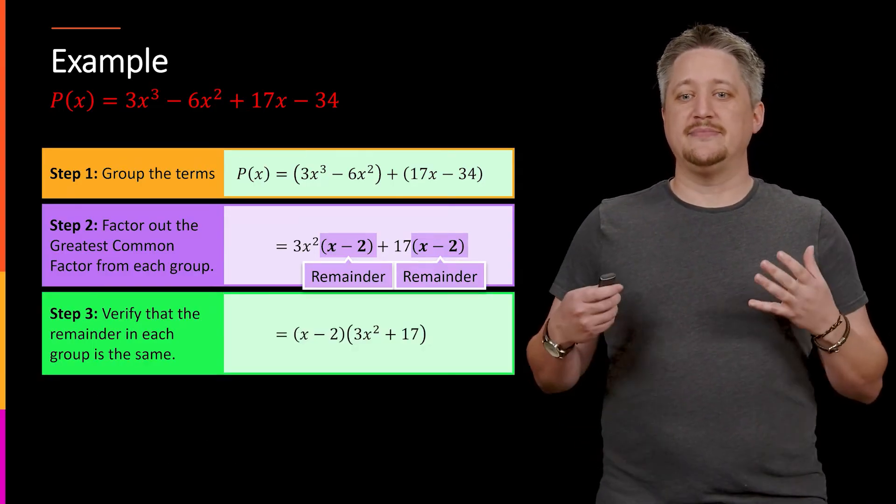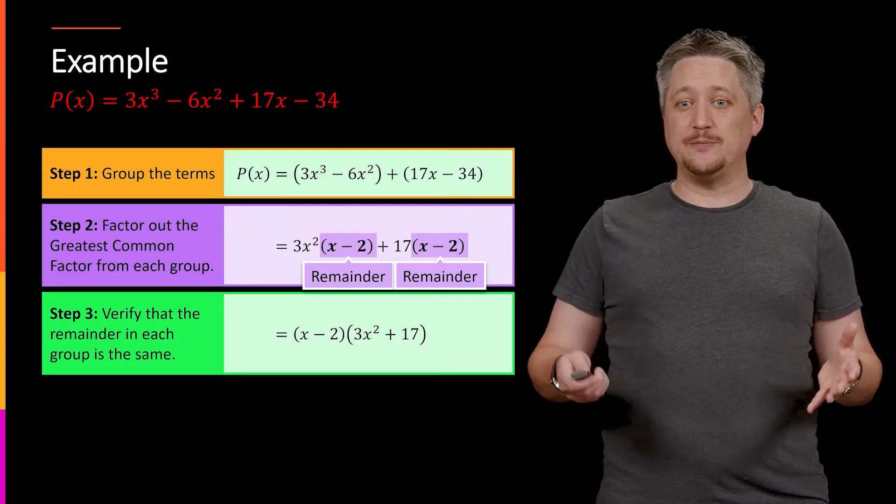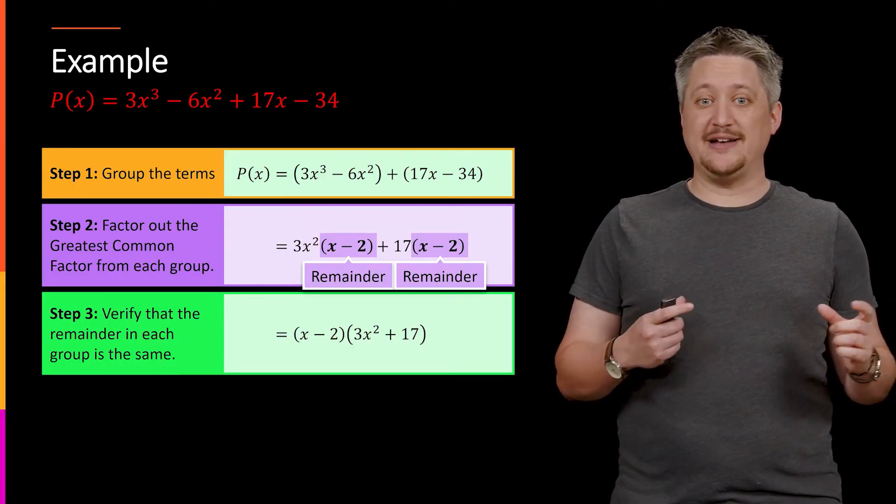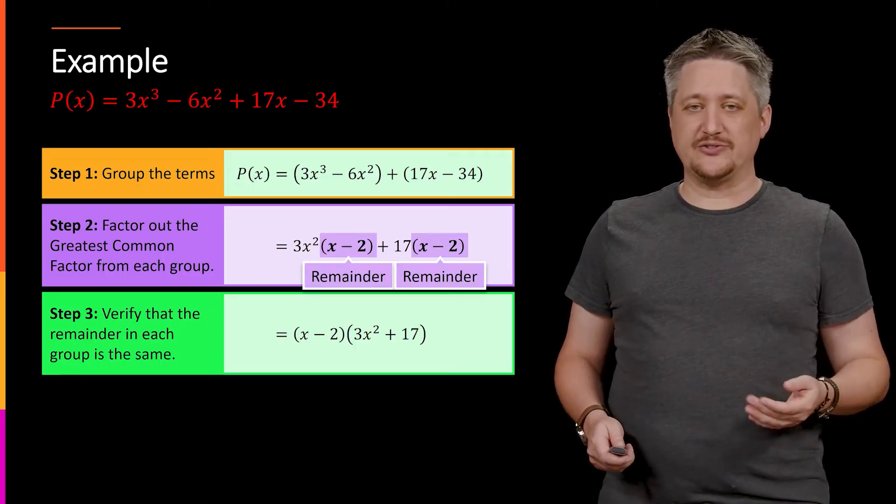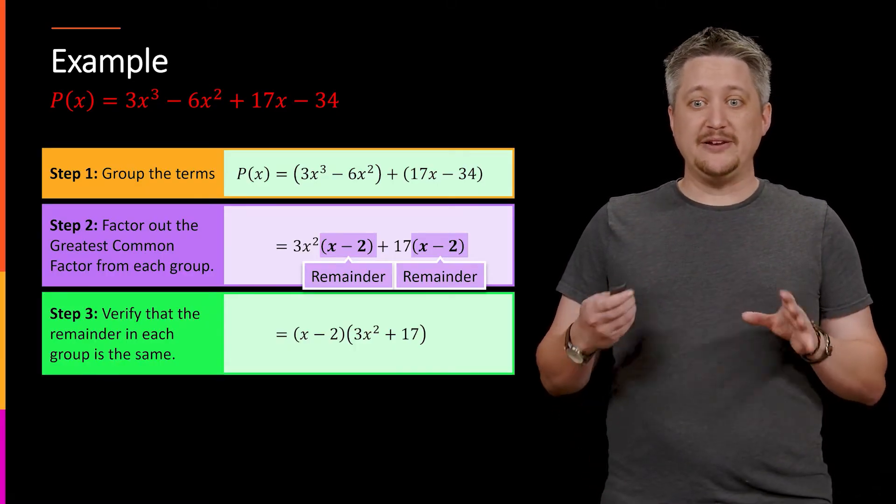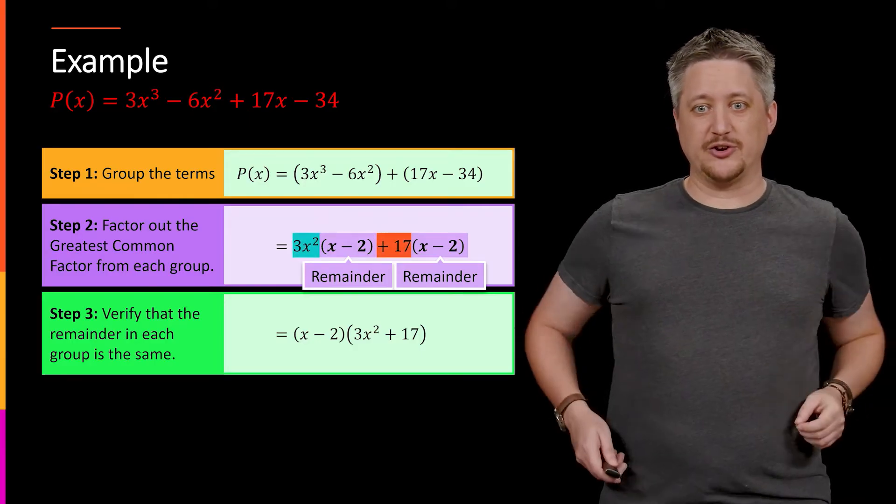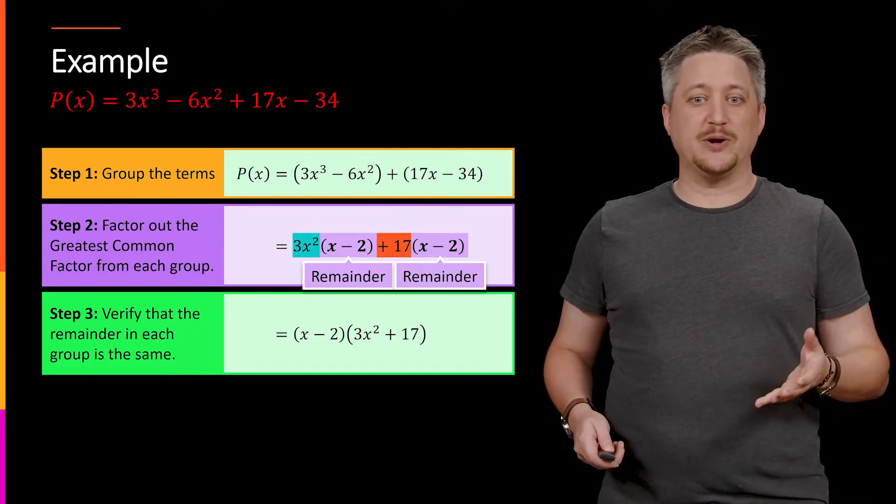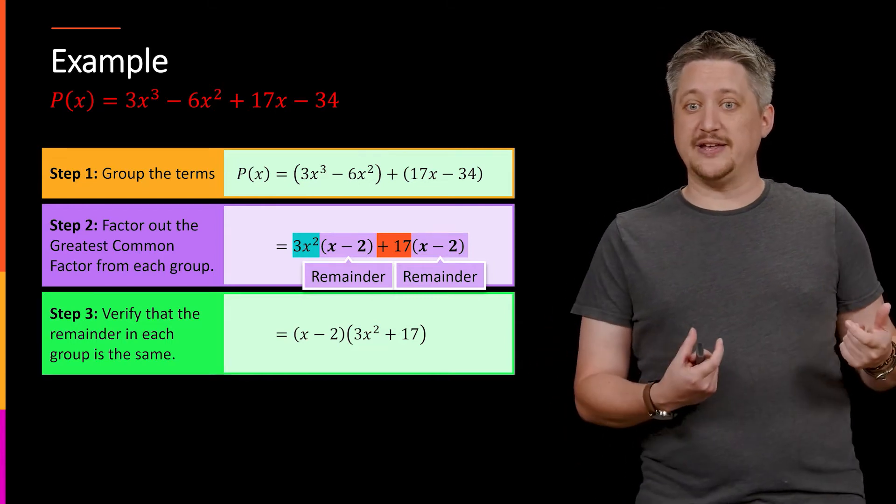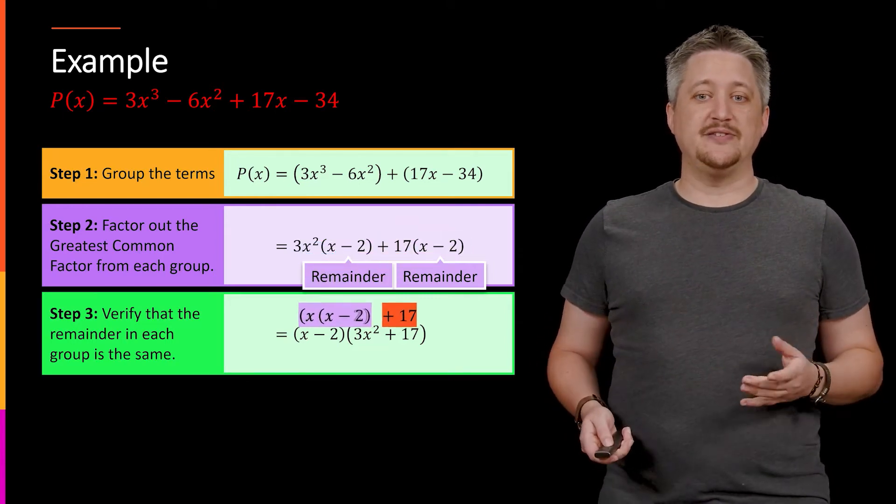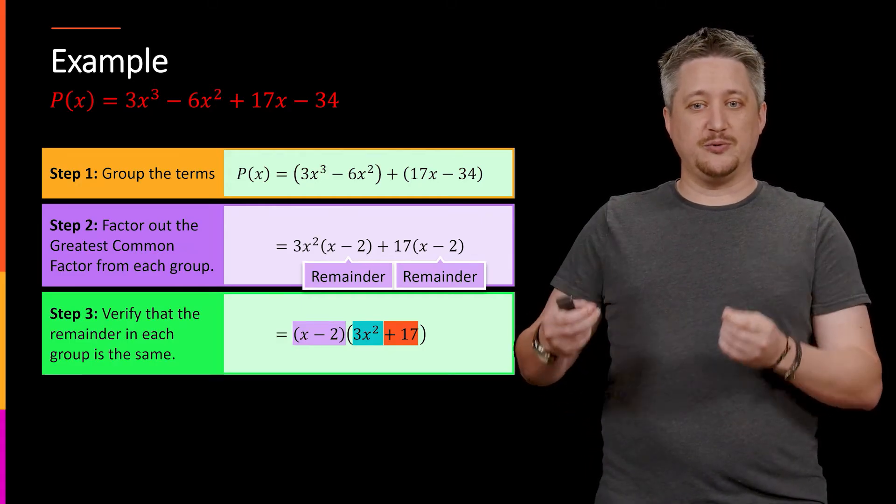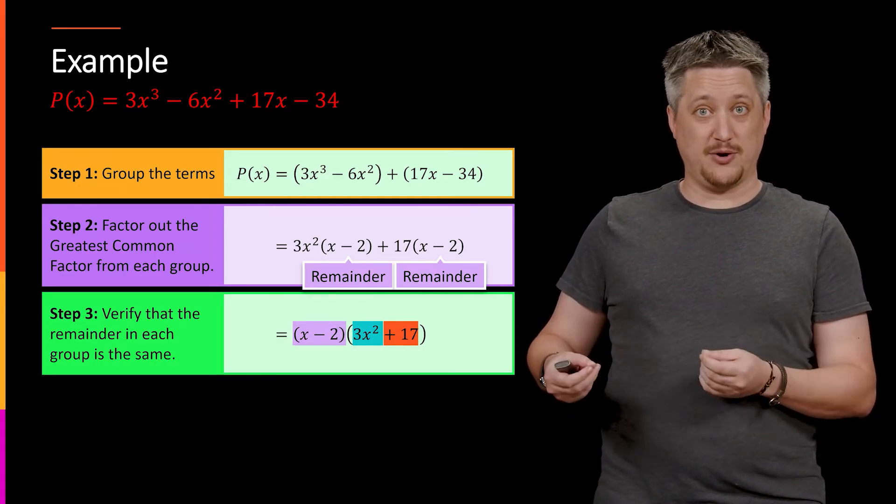So then we get this factored piece. The idea is that we take that remainder, that x minus 2, and we pull it out as if it were a factor, like it were the 3x² or like it was the 17. And that leaves some remainder bit from those given terms. So in particular, the 3x² is going to be left over and the plus 17 is left over when we pull out that x minus 2. And so what happens is the x minus 2 comes out front and each of those other pieces go down and become the other part.